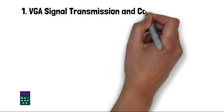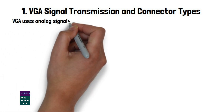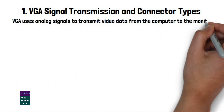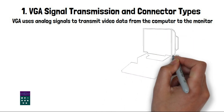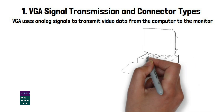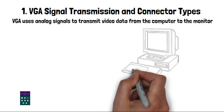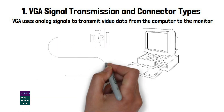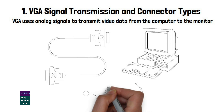VGA signal transmission and connector types. VGA uses analog signals to transmit video data from the computer to the monitor. These signals are continuous, varying voltages that represent different colors and image details. The analog nature of VGA allows for a smooth and natural representation of images. However, it also imposes limitations on the image quality and can be susceptible to interference.